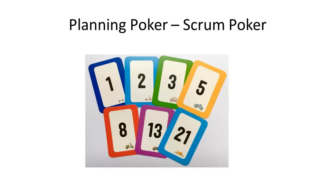Let us now discuss a few estimation techniques useful in Agile implementation, starting with Planning Poker. Planning Poker is a gamified technique used by Scrum teams for effort estimation of features or user stories. It is the most common technique for estimation in Agile. The final estimation is consensus-based and all team members agree to the same.